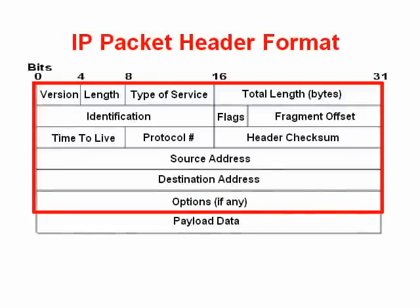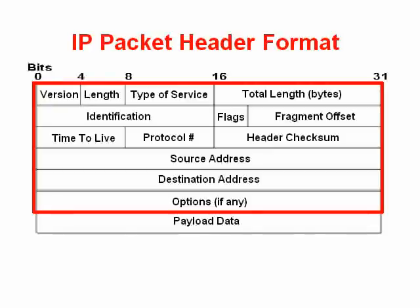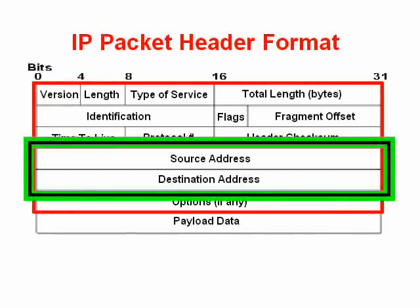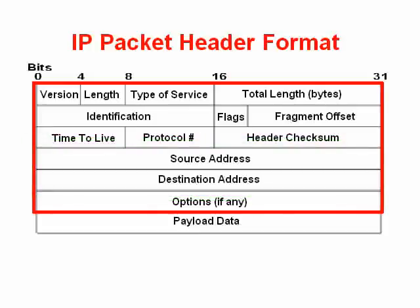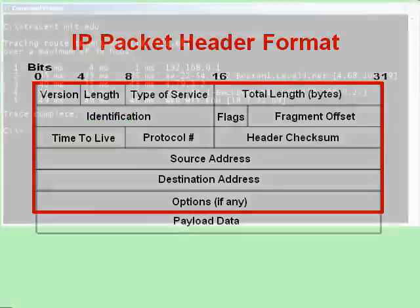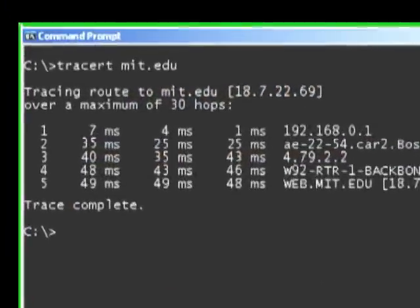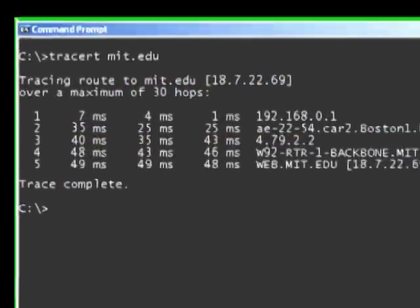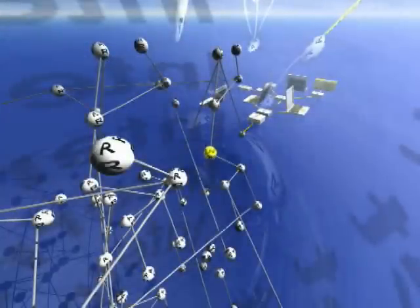Segment 1: Packet Switching. Segment 2: IP Packet Version Number Field and IP Versions 4 and 6. Segment 3: the IP Packet Address Fields. Segment 4: IP Packet Protocol Field. Segment 5: IP Packet Time to Live Field. Segment 6: the ICMP Protocol and the well-known Trace Route Application. Segment 7: Internet Routing.